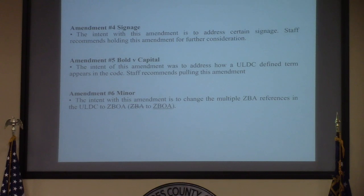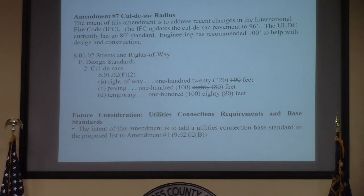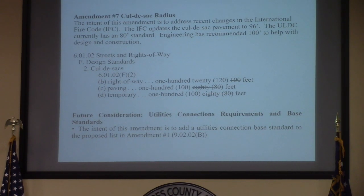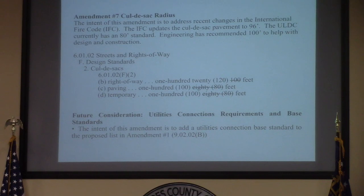Number 6 refers to the CBOA, finally referenced as the CBOA instead of the CBA in the code. Amendment 7 is an update to the International Fire Code with a slight modification based on recommendations from the engineering department to increase our standard widths for easier design purposes. Those additions are in section 60102F, increasing from 100 feet to 120 feet for right-of-way, from paving 80 to 100, and for temporary cul-de-sac again 80 to 100. Future consideration is noted for utilities connection, which staff will be working on in the coming days and weeks.